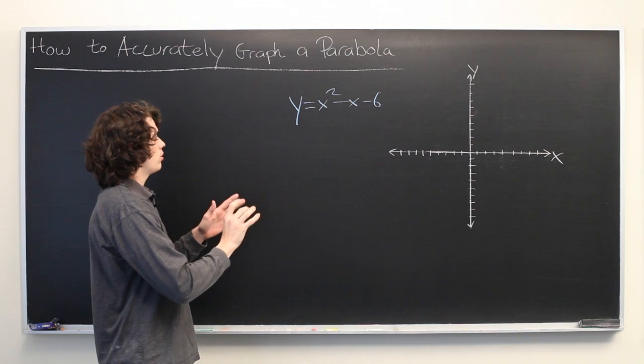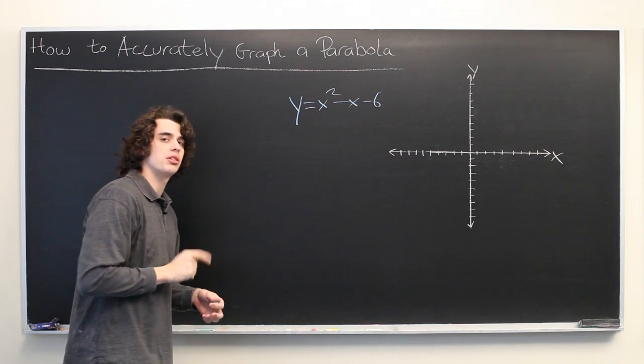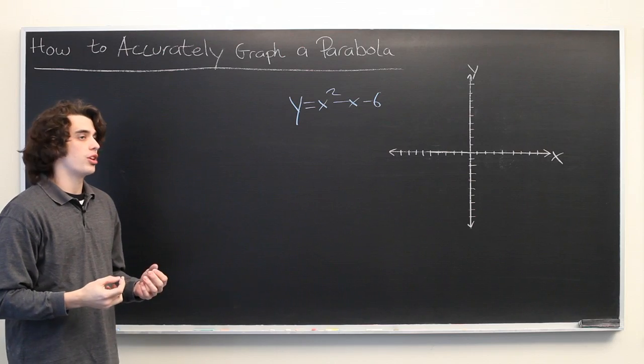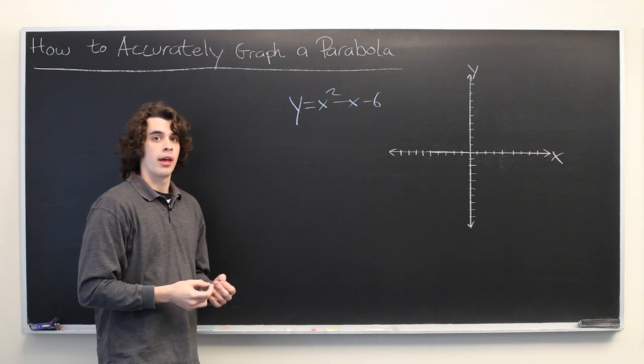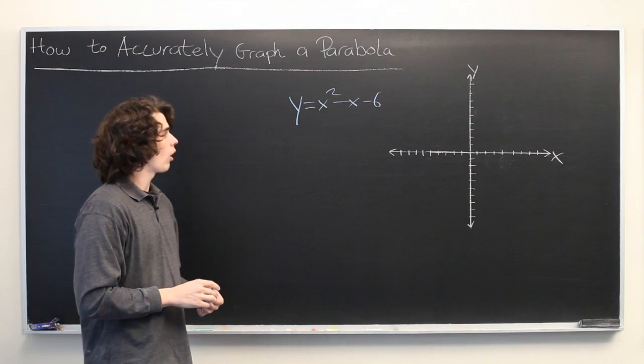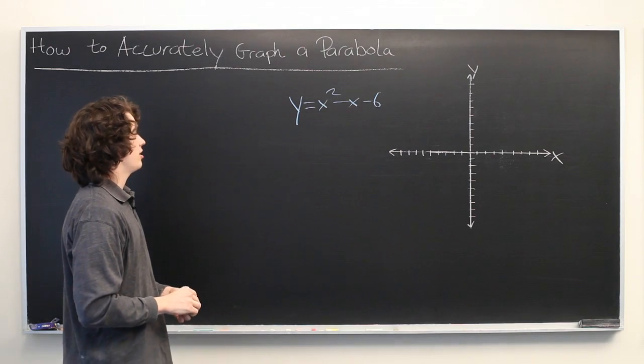Before we do any actual graphing, there are two pieces of information that would be helpful. One is to know where the vertex of our parabola lies, and the other is to know where the x-intercepts lie. We'll start with the vertex since that's the easier of the two.